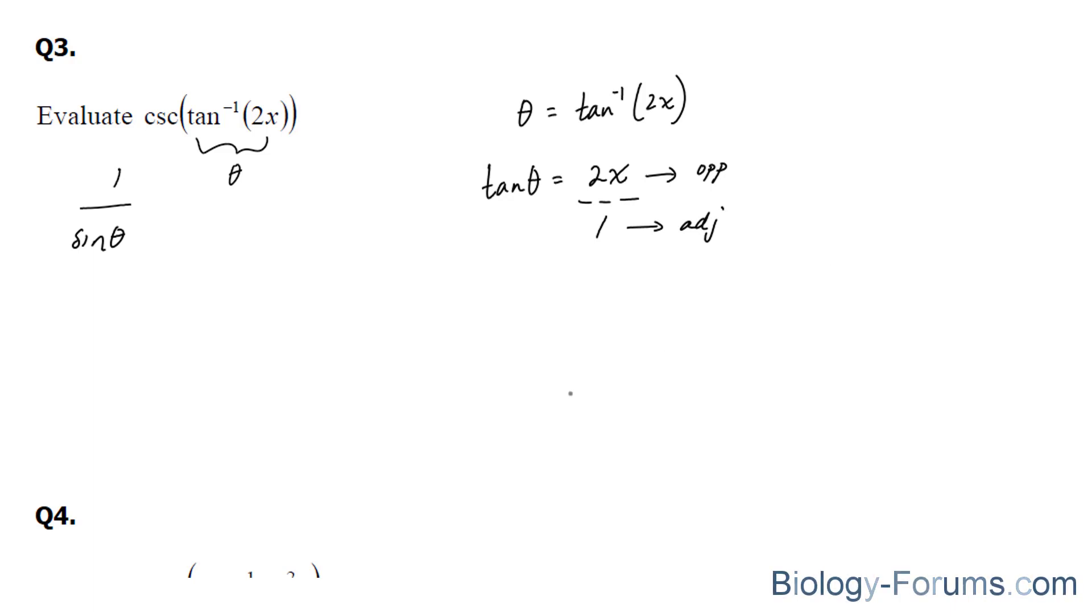That being said, we can create a right triangle using this configuration where the opposite is 2x and the adjacent is 1, and we can easily find our hypotenuse using the Pythagorean Theorem. And if you do that, you should end up with 1 plus 4x squared all square rooted.